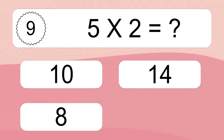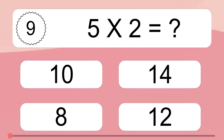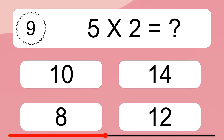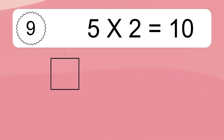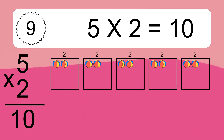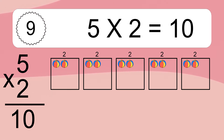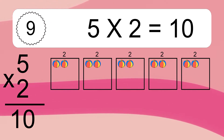5 times 2 equals what? 5 times 2 equals 10. We have 5 boxes, and each box has 2 colorful balls inside. If you count all the balls in all the boxes together, you will have 5 times 2 balls. This equals 10 balls.